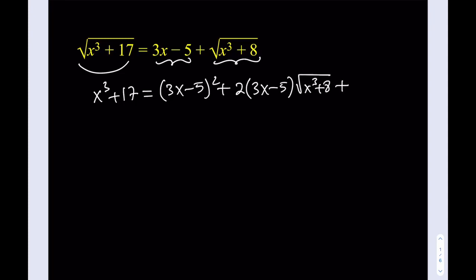So it's going to look like 2 times 3x minus 5 multiplied by the square root of x cubed plus 8, plus I'm going to square the second term, which is x cubed plus 8. Awesome. And then from here, obviously, you'll be getting something nicer, right? Like, x cubed is going to cancel out.